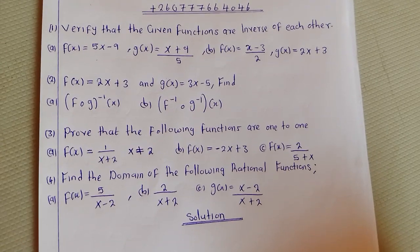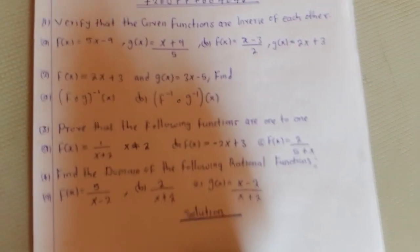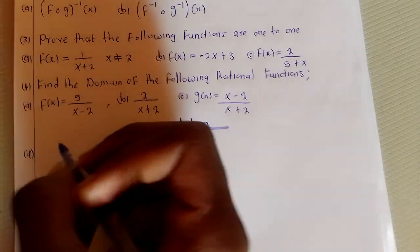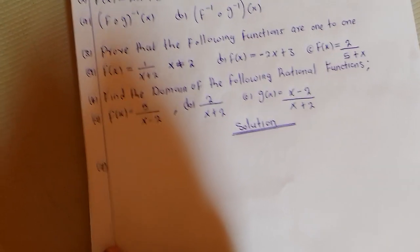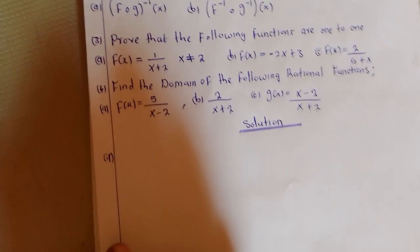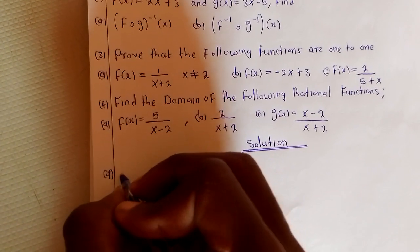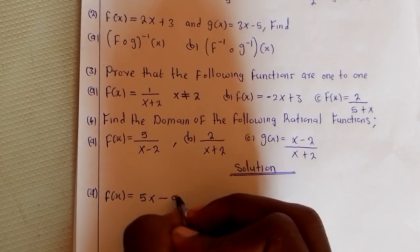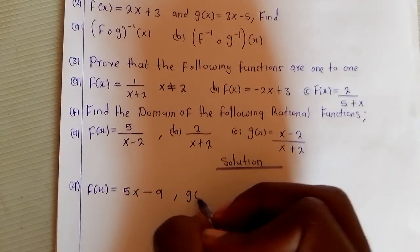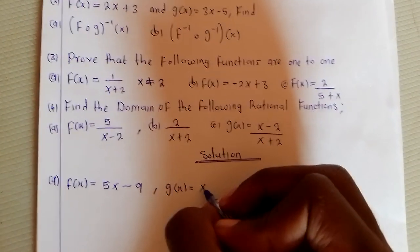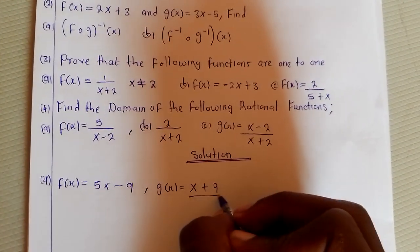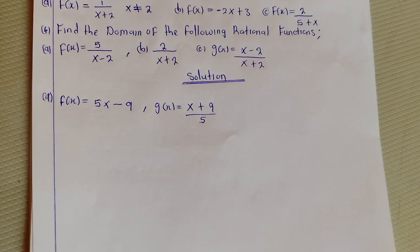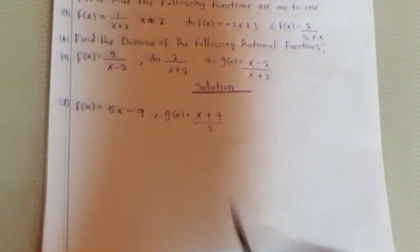I've been given the first function, f(x) = 5x - 9, and g(x) = (x + 9)/5. We need to verify that these two are inverse of each other.